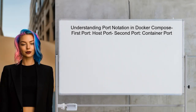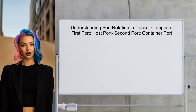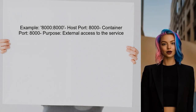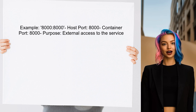To understand why ports are specified twice in Docker Compose, let's first break down the notation. The first port number represents the host port, while the second port number represents the container port. In the example 8000:8000, port 8000 on the host machine is mapped to port 8000 on the container. This allows external access to the service running inside the container.